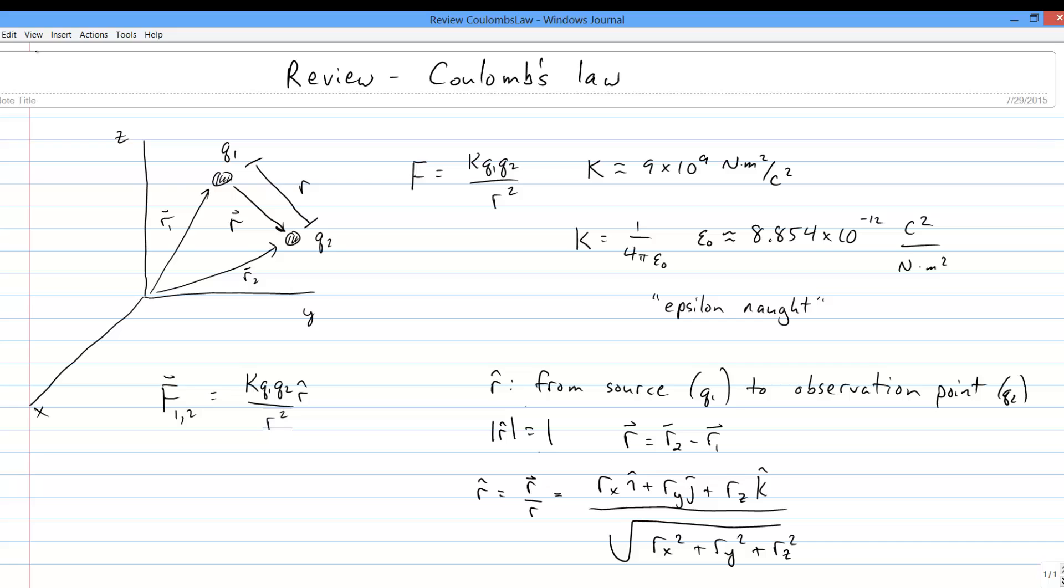Now, since unit vectors can be clunky to calculate, you'll often see Coulomb's law written with a little substitution. r-hat is equal to the r-vector over the magnitude r, so if I just slide that right in, we get what I consider to be a cleaner form of Coulomb's law for actual problems, written in terms of r-cubed. This is what you'll see me use most of the time.